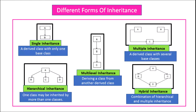In multiple inheritance, A and B are the base classes of the child class C. In hierarchical inheritance, one class may be inherited by more than one class — that is, you can have more than one child of a single base class. You can see in this example that A is the base class and B, C, and D are child classes derived from the base class A.